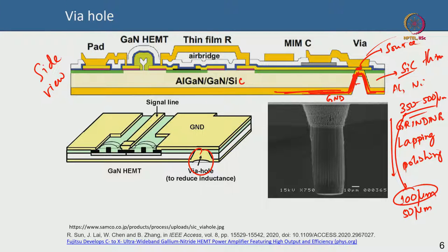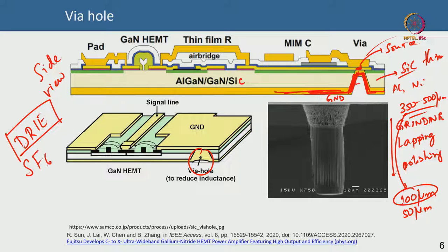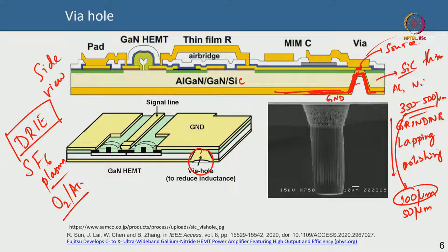After thinning to about 100 µm, you etch via holes using deep reactive ion etching — a high-power plasma tool requiring around 600–800 W of RF power. People use SF6 plasma to etch the SiC. You have to ensure that the etch byproducts become volatile species so they do not re-deposit. Oxygen or argon is also added to the plasma. These are process issues that must be carefully optimized.